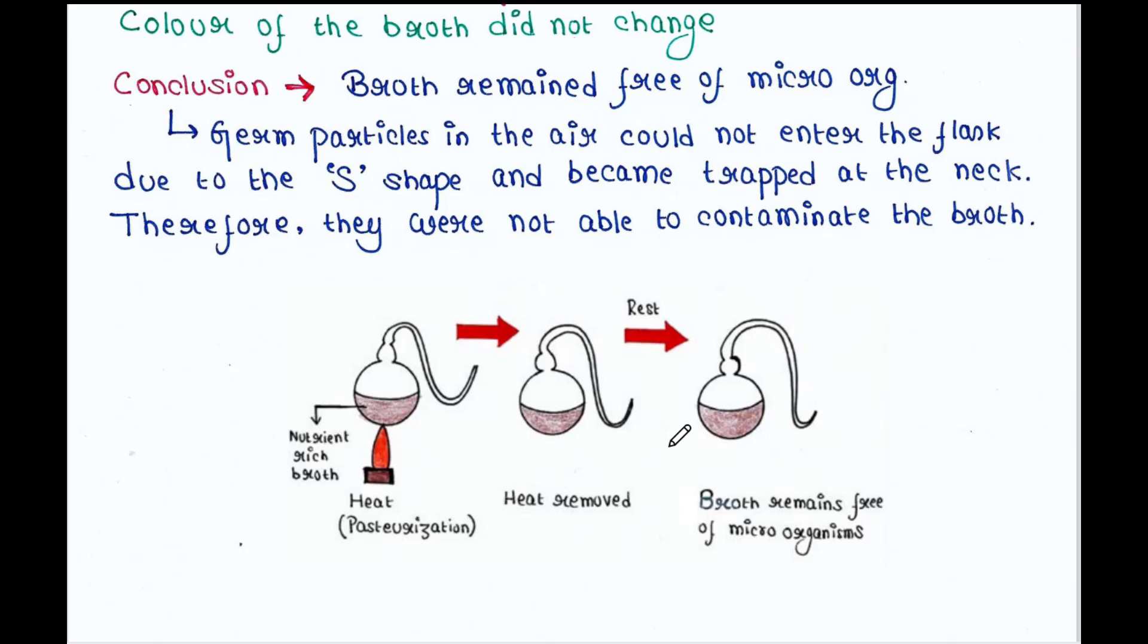So the broth remained free of microorganisms. He explained the germ particles in the air could not enter the flask due to the S-shape and became trapped at the neck.